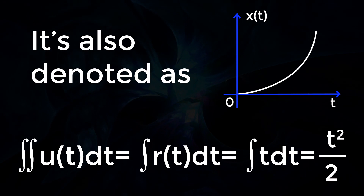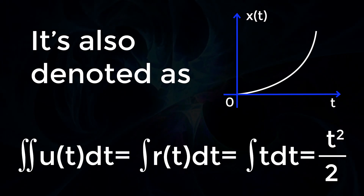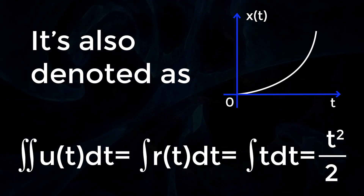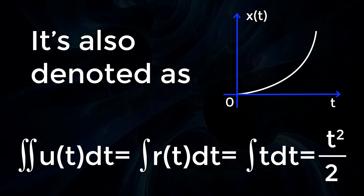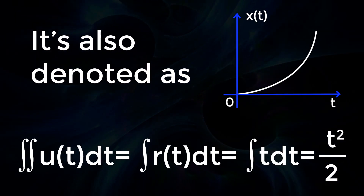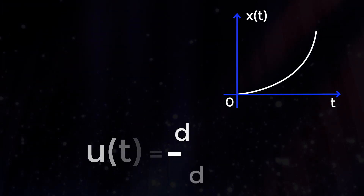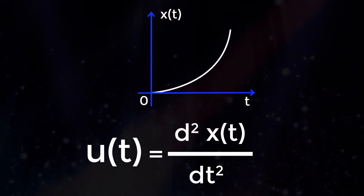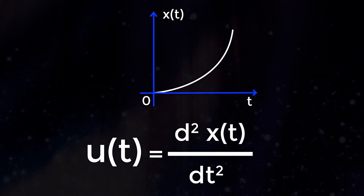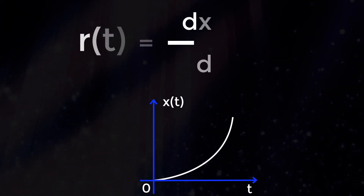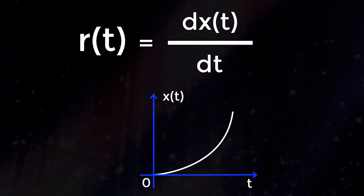It is also denoted as the double integral of u(t) dt, which equals ∫r(t) dt = ∫t dt = t²/2. From this, u(t) = d²x(t)/dt² and r(t) = dx(t)/dt.